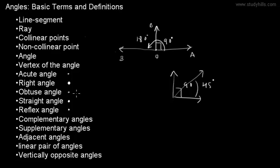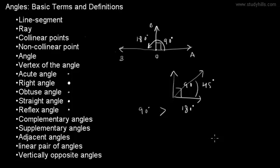If an angle is more than 90 degrees and less than 180 degrees, then it is called an obtuse angle. For example, this angle shown here is an obtuse angle.